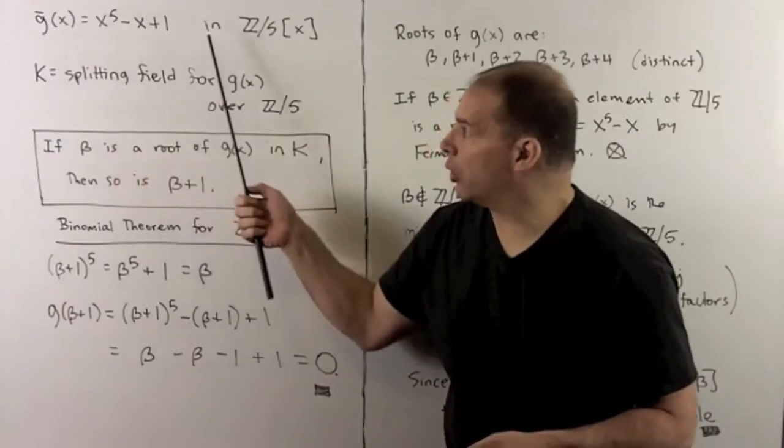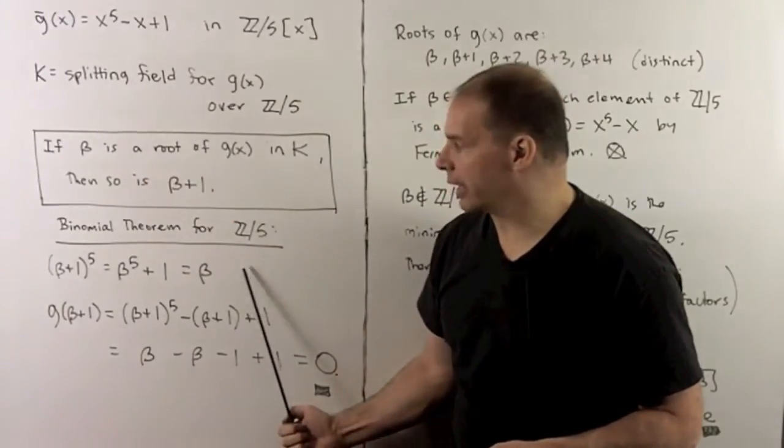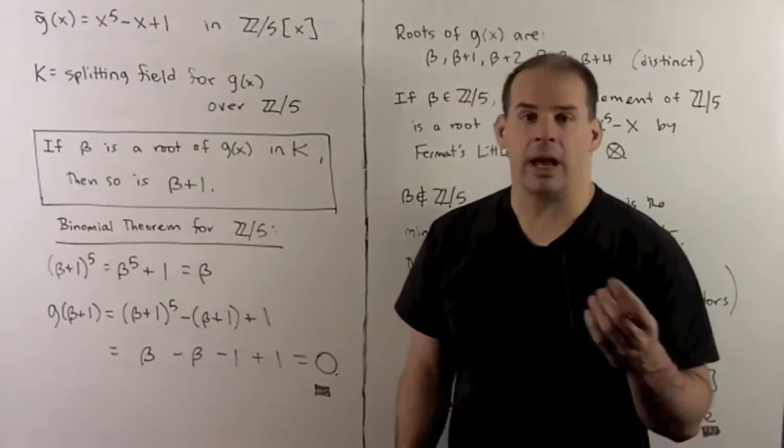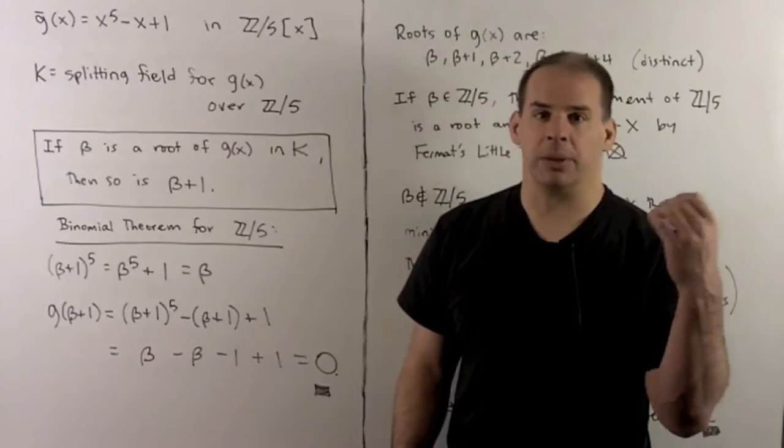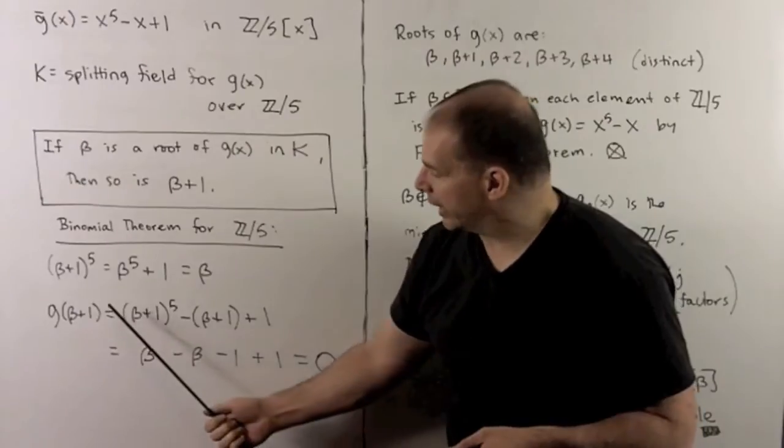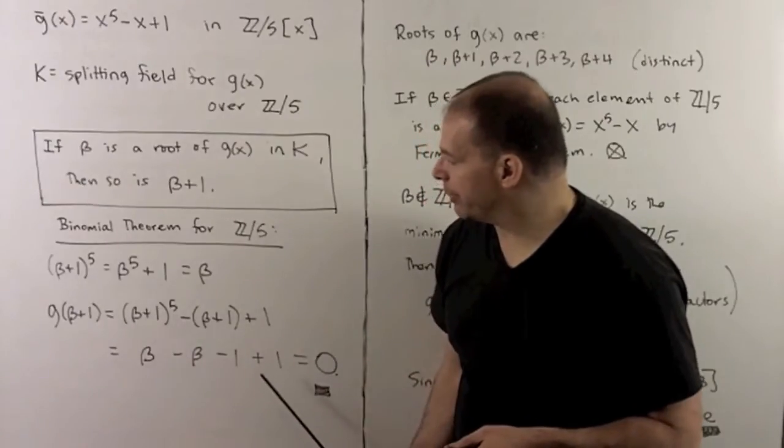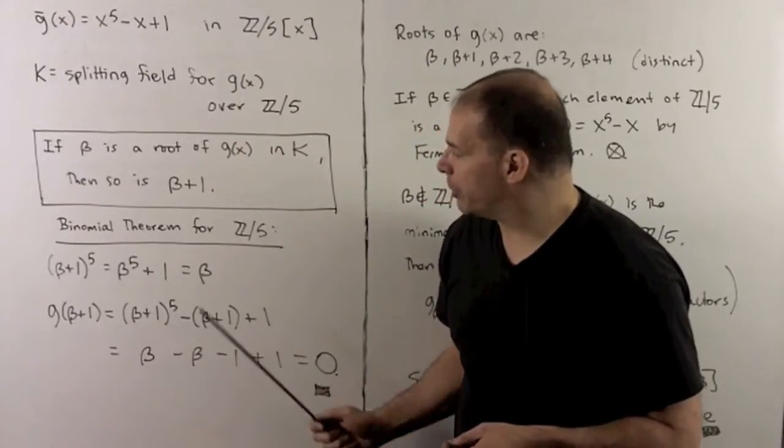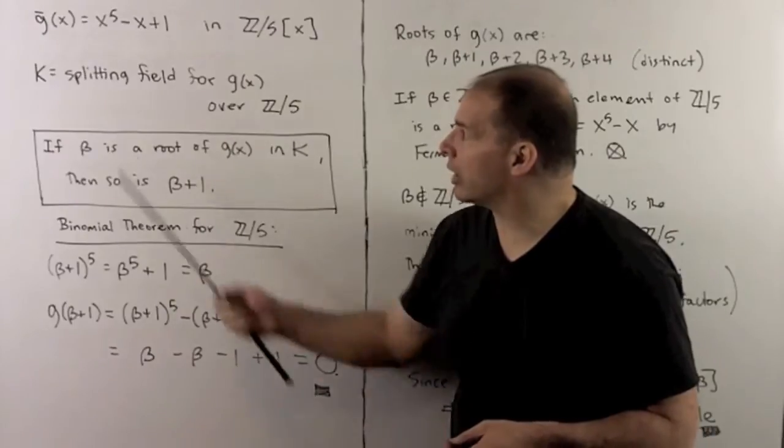Because beta is a root of this polynomial, that's going to be equal to beta. Now, if I compute g of beta plus one, we put beta plus one in. We evaluate and substitute, and what comes out is zero. So beta plus one is also a root of this polynomial.